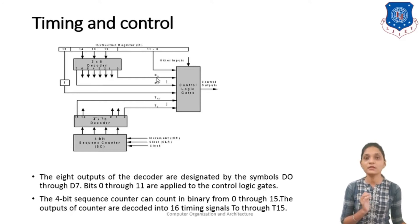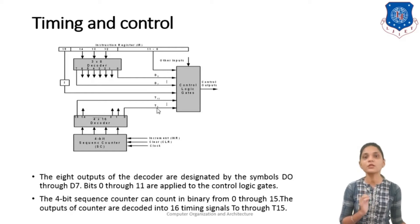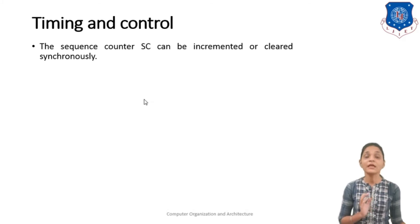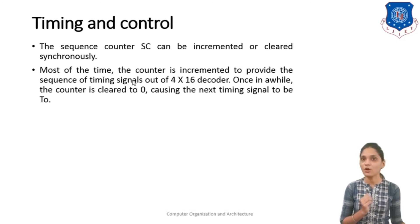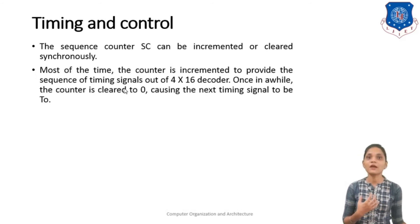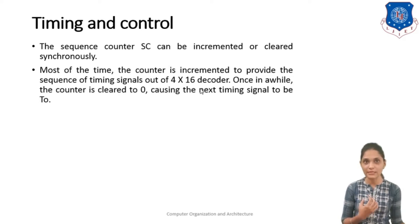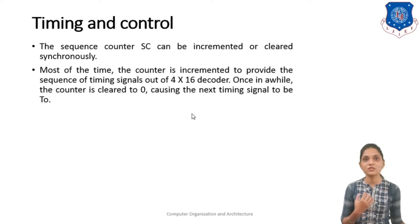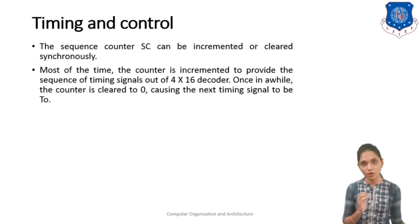D0, D1, D2 represent your control signals, and T1, T2, T3 up to T15 represent your timing signals. So you can generate T0 to T15 timing signals. The sequence counter SC can be incremented or cleared synchronously. Most of the time the counter is incremented to provide the sequence of timing out of the 4x16 decoder, and once in a while this counter is cleared to 0, causing the next instruction's timing signal to start from 0.